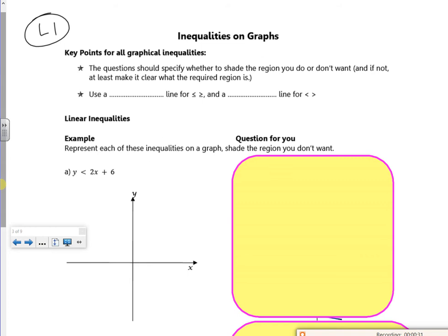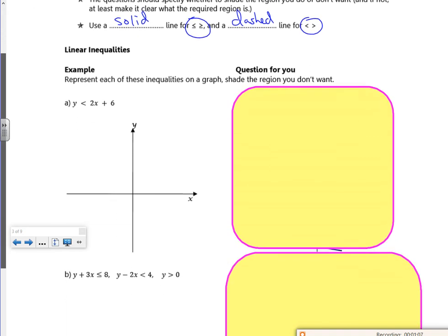So it says, questions should specify whether to shade the region you want or the region you don't want, or if not, at least make it clear. So it's a little bit of ambiguity for us. We tend to shade the stuff we don't want, so we have a clear bit of the bit that we do want. So that's our idea. So if it's got an equals on it, I use a solid line. But if it hasn't got equals on it, I use a dashed line.